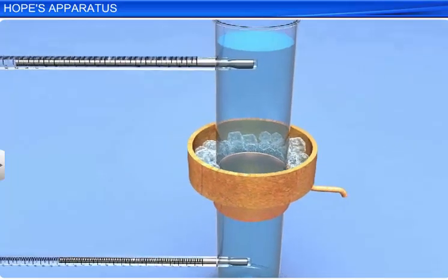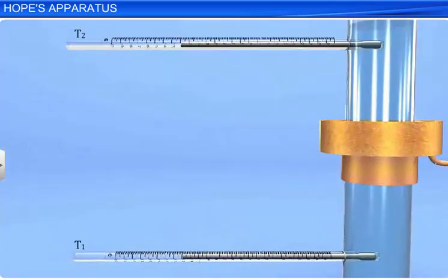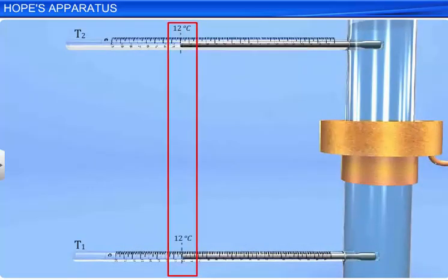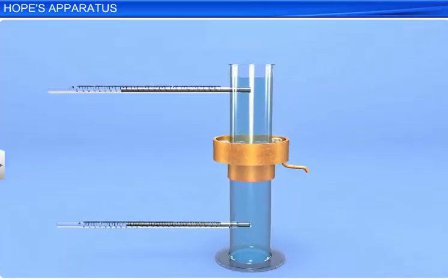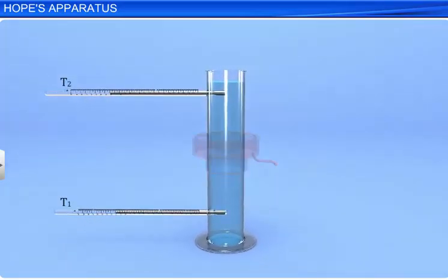Initially, both the thermometers show the same reading, say, 12 degrees Celsius. As the trough is filled with the freezing mixture, the water in the central portion of the jar loses heat energy and gets cooled. Its volume decreases and density increases.